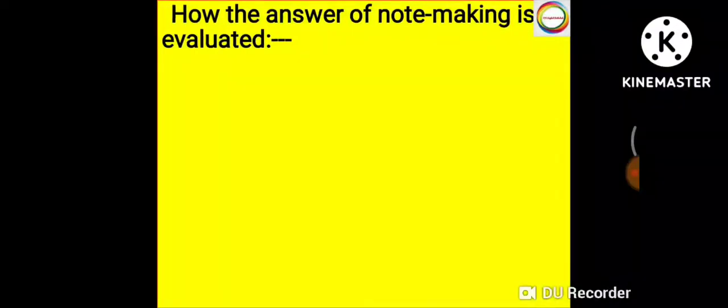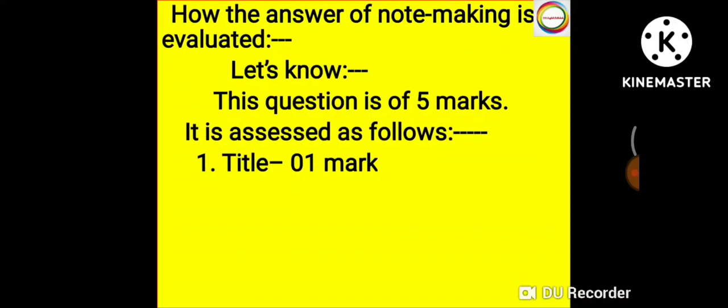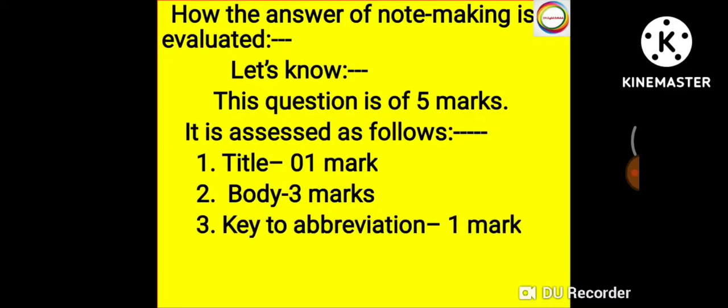How is the answer of note-making evaluated? This question is of five marks. It is assessed as follows: Number one, title—one mark. The title should be catchy, attractive, appropriate, and should cover all the passage, not certain parts. Number two, body—three marks. This is 1.5 marks for the phrases and 1.5 marks for proper language, use of sign marks, punctuation marks, and proper indenting. Number three, key to abbreviation—one mark.